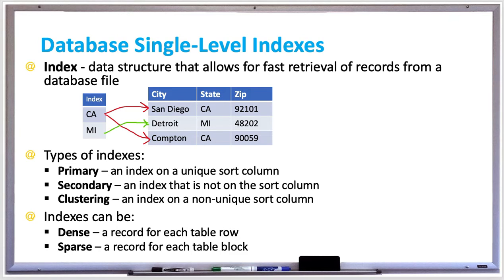If an index column is unique, the index has one entry for each column value. However, if the index column is not unique, then the index could have multiple entries for some column values, or one entry for each column value followed by multiple pointers.